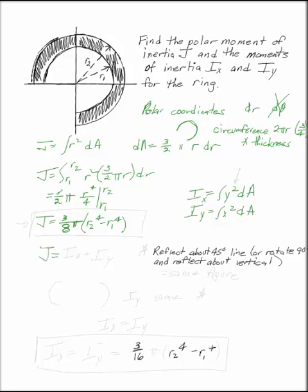We want to recall that J equals IX plus IY. So whatever our answer is, it's got to add up to the J we just found. That was our first answer.